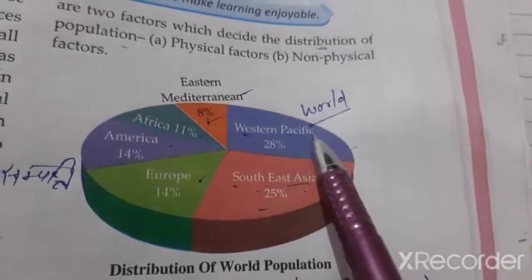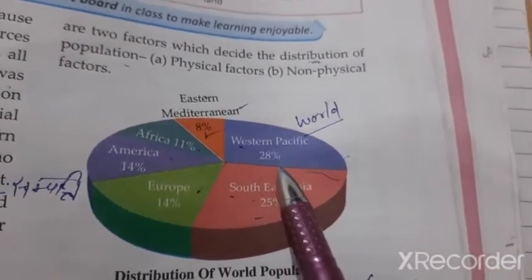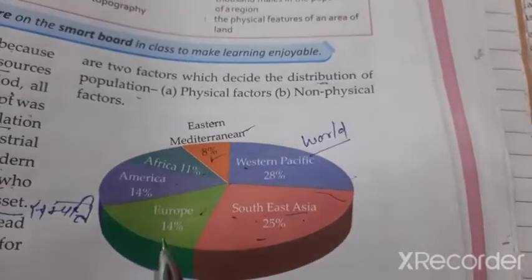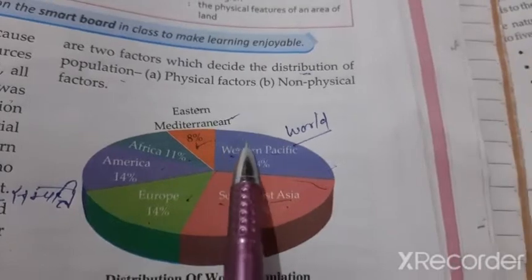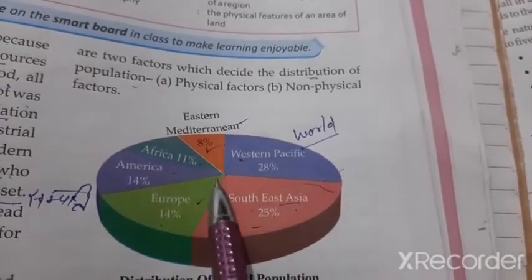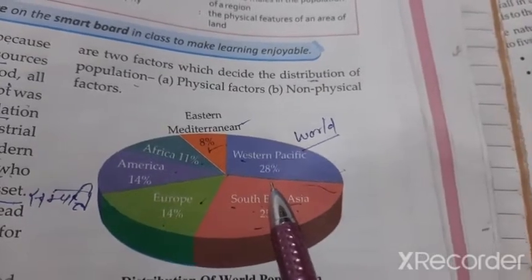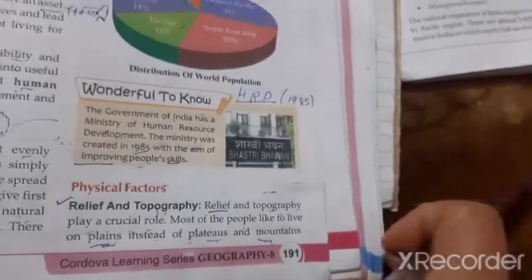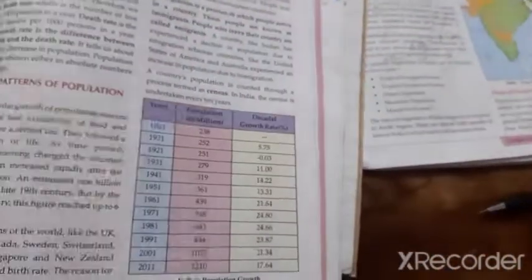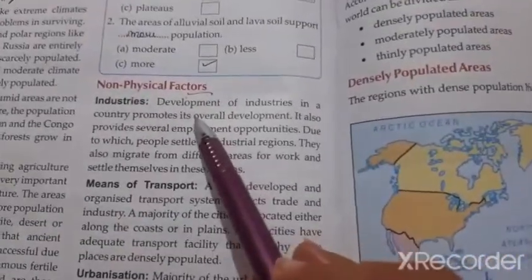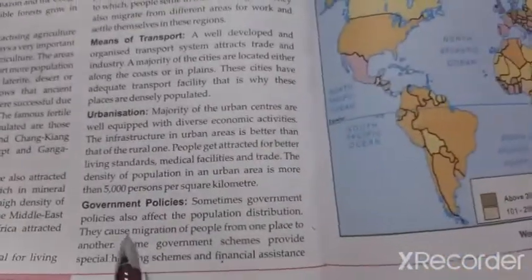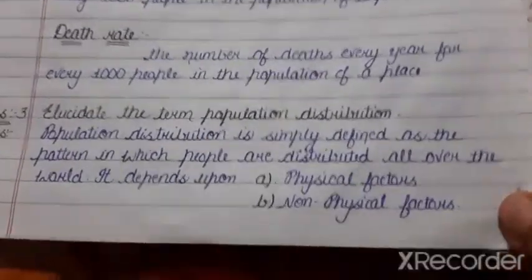As shown in the diagram: Western Pacific area has 28% population distribution, South East Asia 25%, Europe 14%, America 14%, Africa 11%, and Eastern Mediterranean area 8%. The distribution pattern depends on physical factors such as relief and topography, climate, natural vegetation, soil, mineral resources, and non-physical factors such as industries, means of transport, urbanization, and government policies.